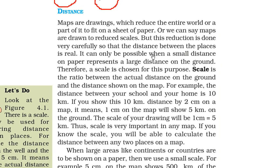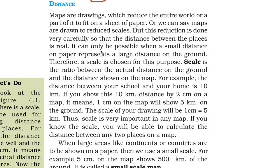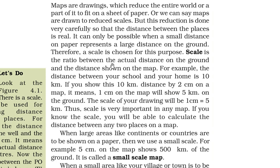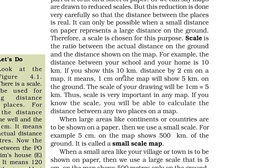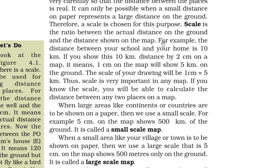Maps are drawings which reduce the entire world or a part of it to fit on a sheet of paper. Maps are drawn to reduced scales, but this reduction is done very carefully so that the distances between places are somewhat real. A small distance on paper represents a large distance on the ground. A scale is chosen for this purpose. Scale is the ratio between the actual distance on the ground and the distance shown on the map. For instance, if the distance between your school and home is 10 km and you show this by 2 cm on a map, then 1 cm on the map represents 5 km on the ground. So the scale of your drawing will be 1 cm equals 5 km.